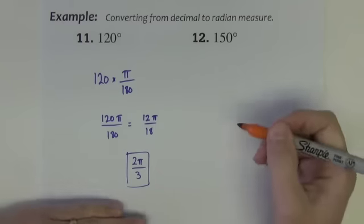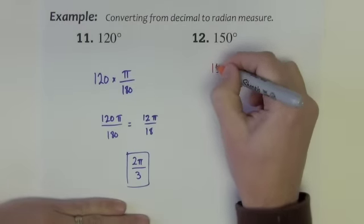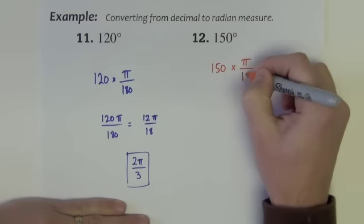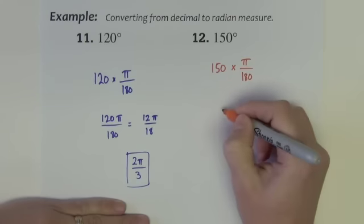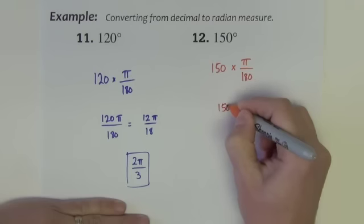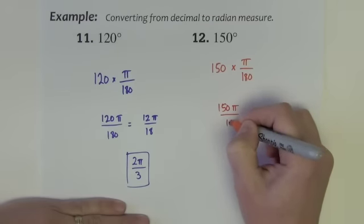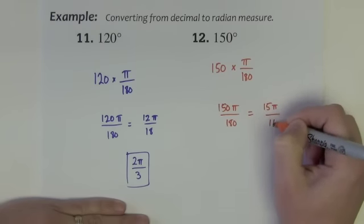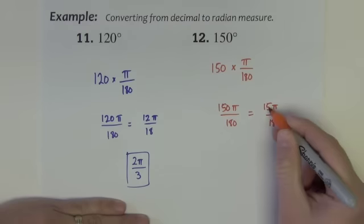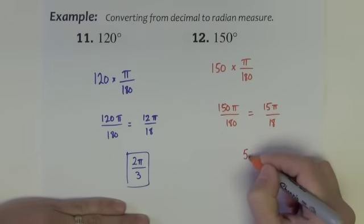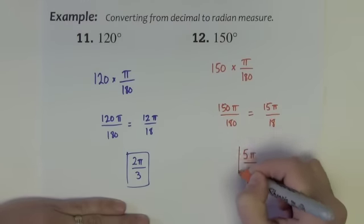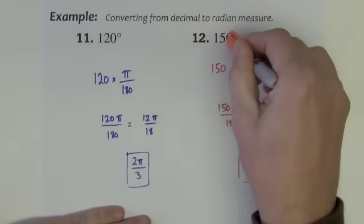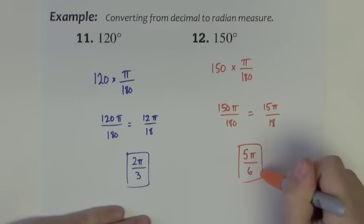One more for practice: 150 degrees. We multiply by pi over 180, giving 150 pi over 180. Reduce by 10 to get 15 pi over 18; both divide by 3, so we get 5 pi over 6. So 150 degrees is equal to 5 pi over 6 radians.